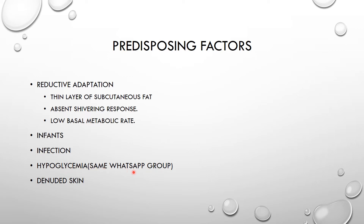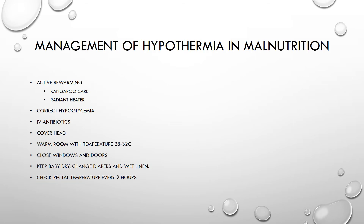Then denuded skin — also any breaches in the skin. For management of hypothermia in malnutrition, we talk of active re-warming. Active re-warming involves kangaroo care and the use of radiant heaters. We will discuss these two separately.